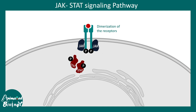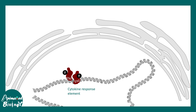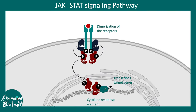Once phosphorylated, STAT proteins are activated and dimerize with each other. They are then free to move to the nucleus, where they bind to cytokine response elements and trigger specific gene activation. Many of these genes are cytokine genes, especially pro-inflammatory ones.